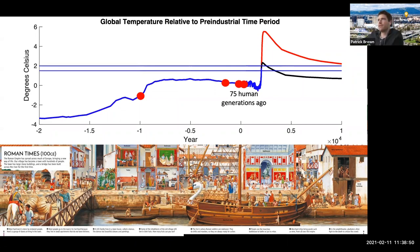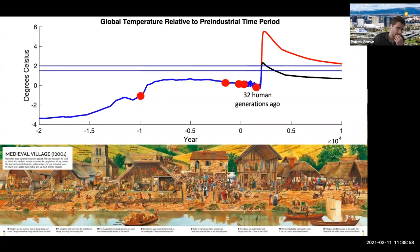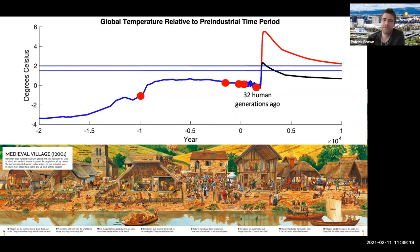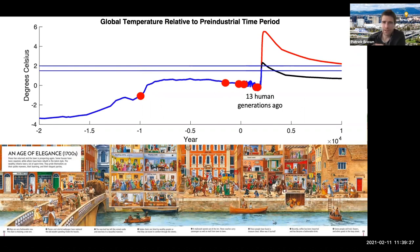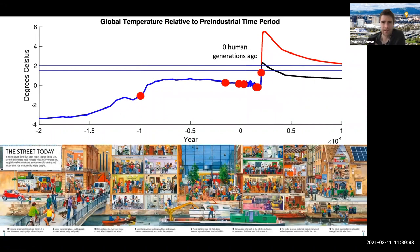Thinking about 75 human generations into the future shouldn't be so abstract now. We wouldn't be very happy with people 75 human generations in the past if they had done something that drastically hurt our way of life. Then we go back to a medieval village — fall of Rome, then back to medieval times — 32 human generations ago. 13 human generations ago we have the 1700s — 400 years ago. We are 400 years downstream of their decisions. There will be people 400 years downstream of our decisions. And here's our street today — zero human generations ago.